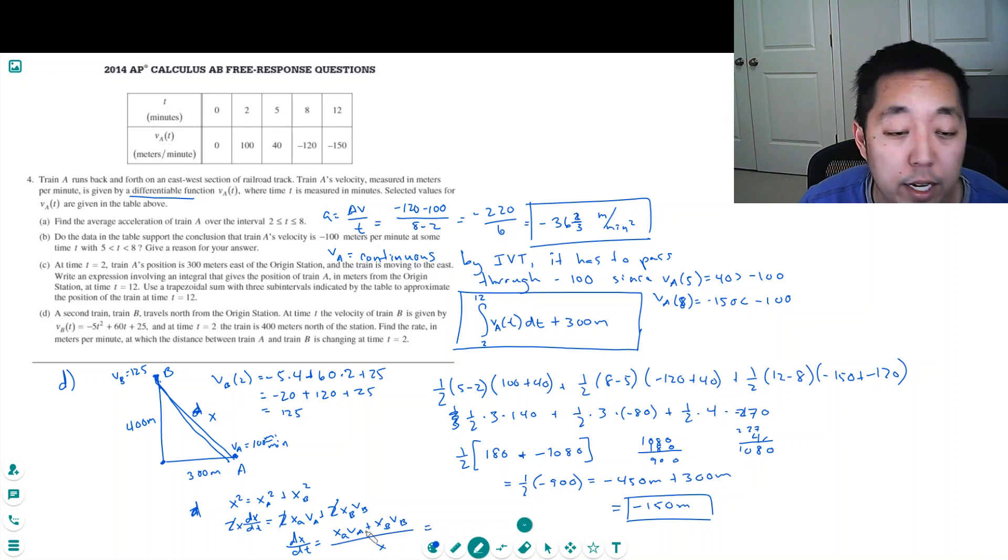Plugging in the numbers that I know: XA is 300, VA is 100, XB is 400, VB is 125. And then X, the distance between them, because this is a 3-4-5 triangle, is 500. So the hundreds cancel out. You get (300 plus 500) over 5, that's 800 over 5, which equals 160 meters per minute.